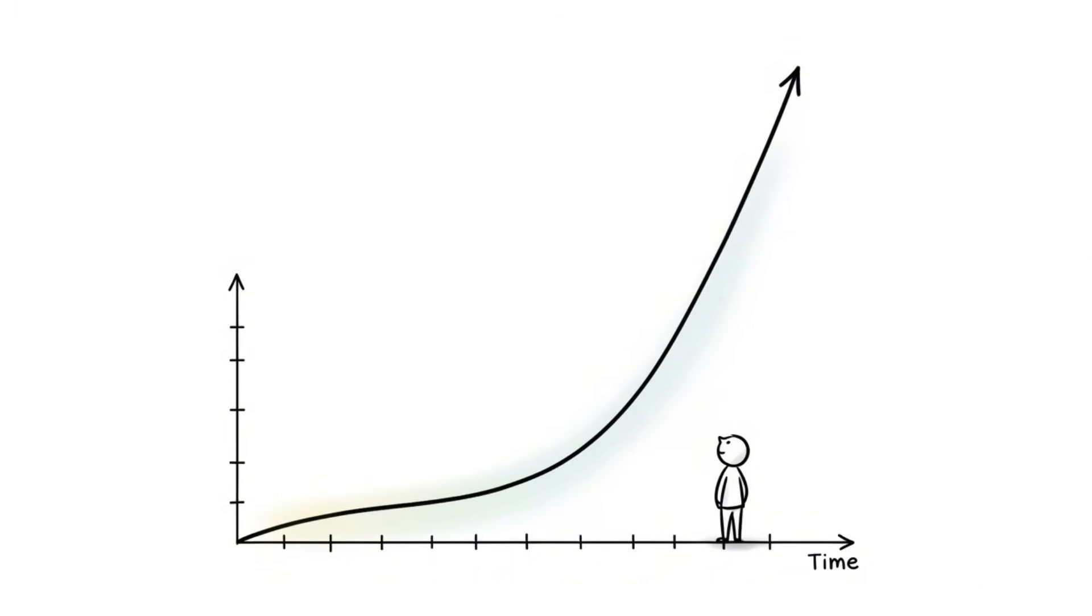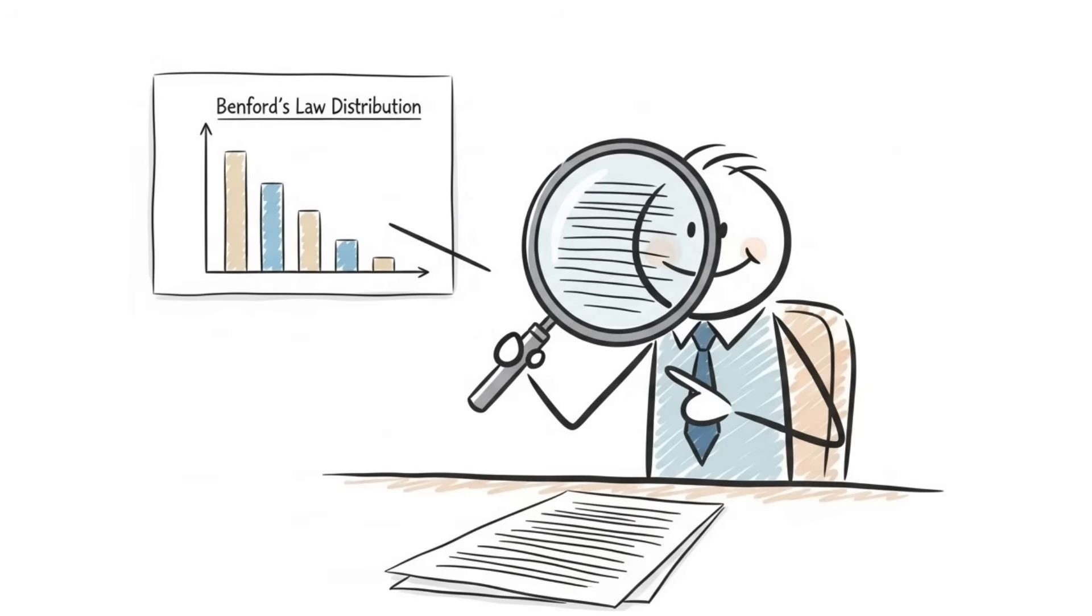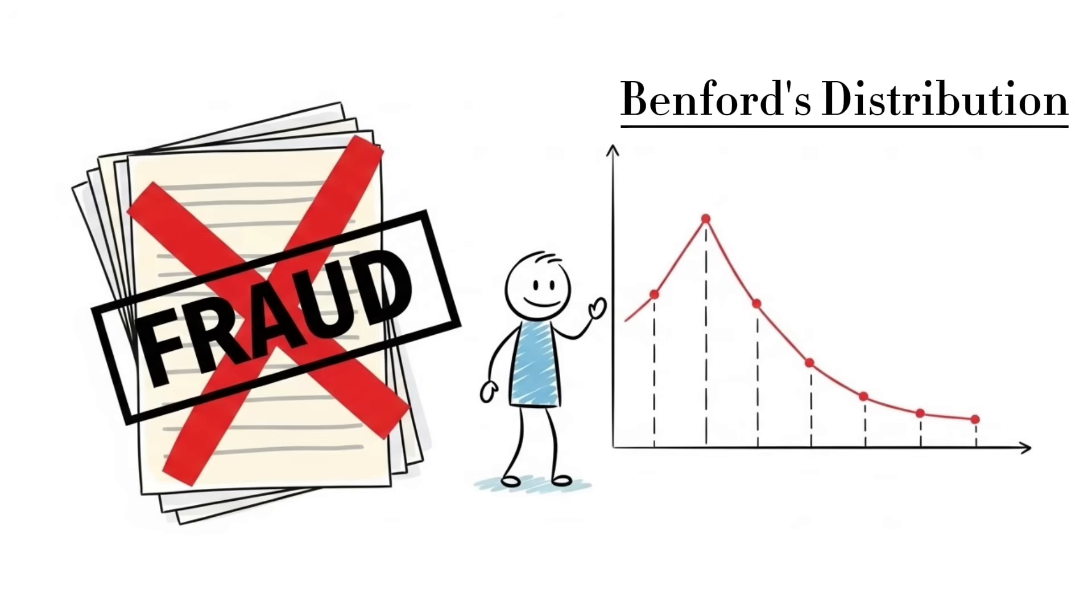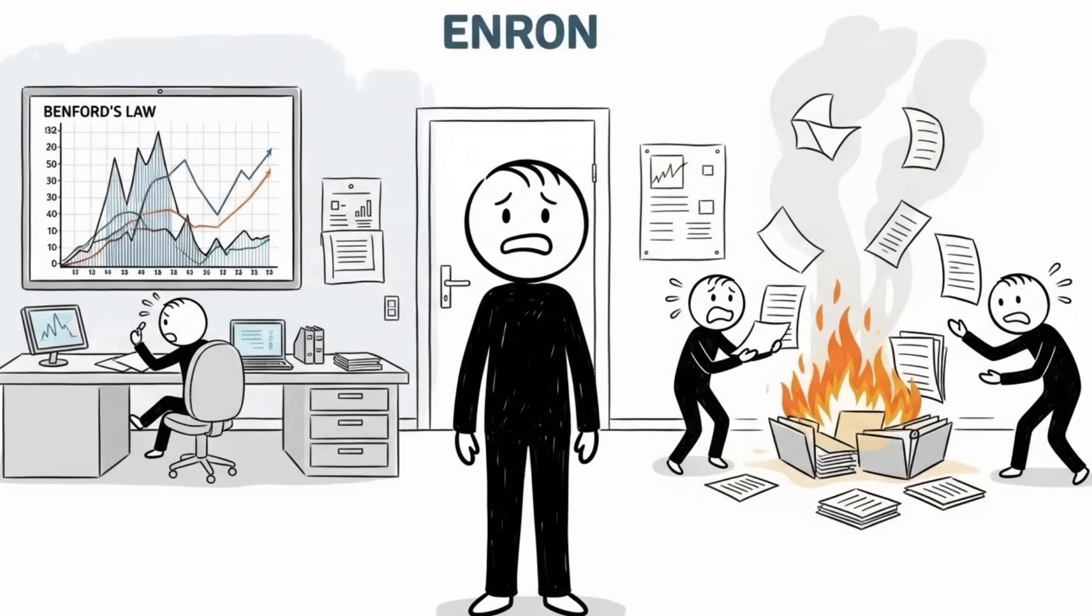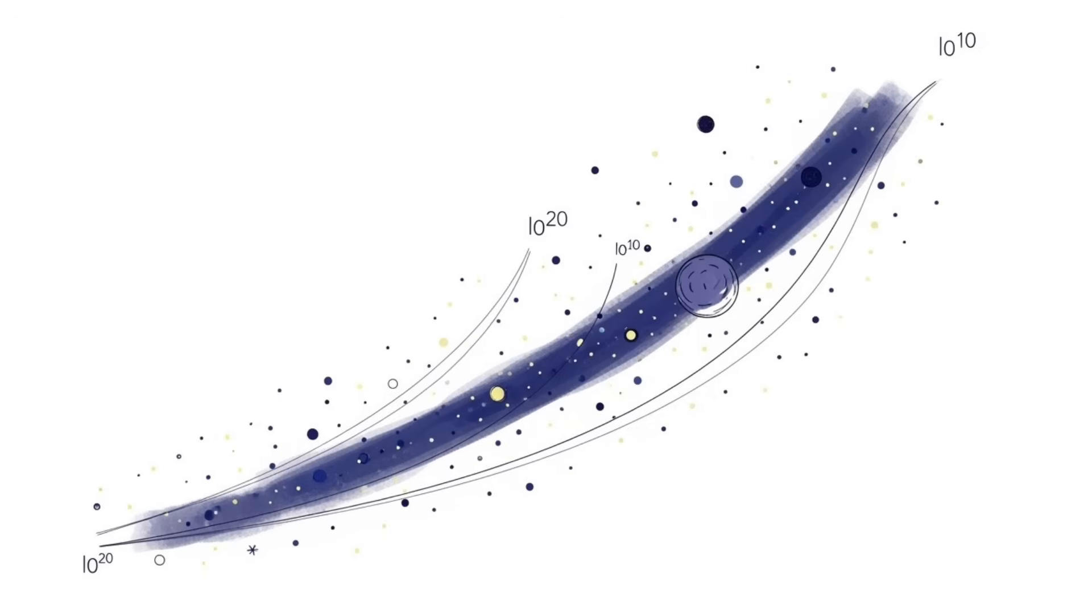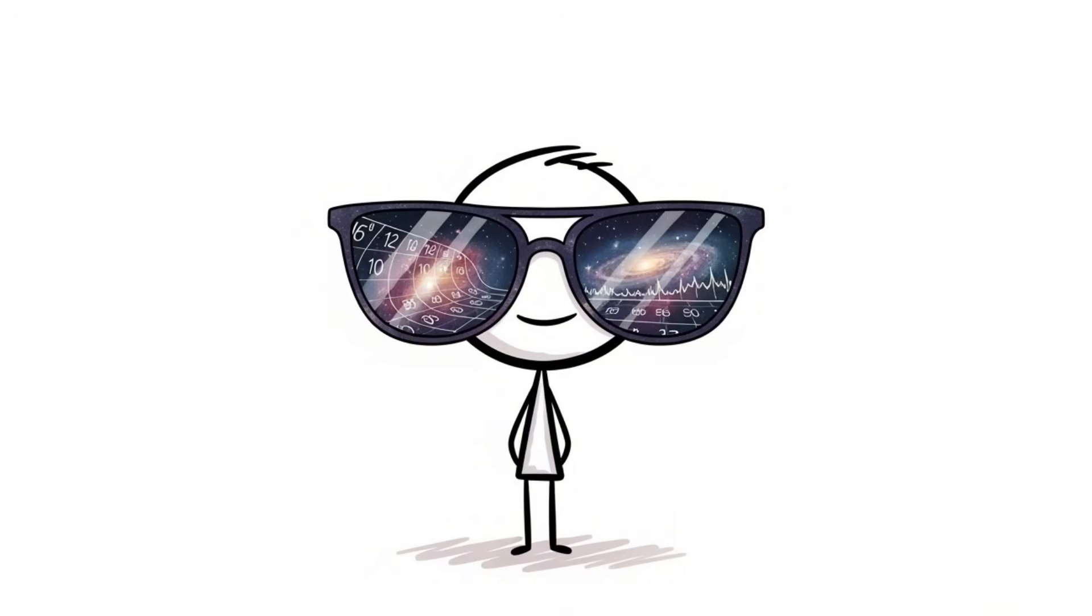It works because naturally occurring numbers grow exponentially, spending more time in lower ranges before jumping scales. It's so consistent across naturally occurring data that forensic accountants use it to detect fraud. If financial records don't follow Benford's distribution, someone's cooking the books. Enron's numbers violated this law before the scandal broke. The universe runs on logarithms, and when humans fake it, the math catches them every time.